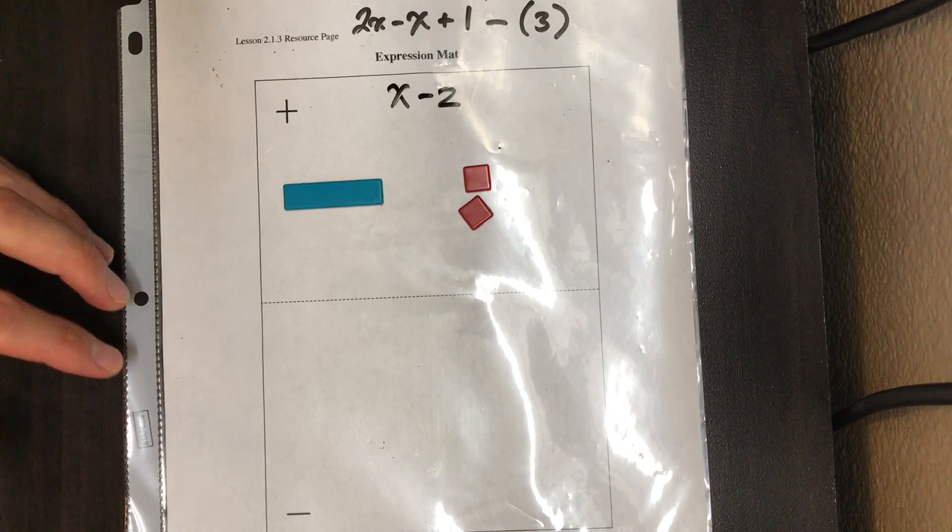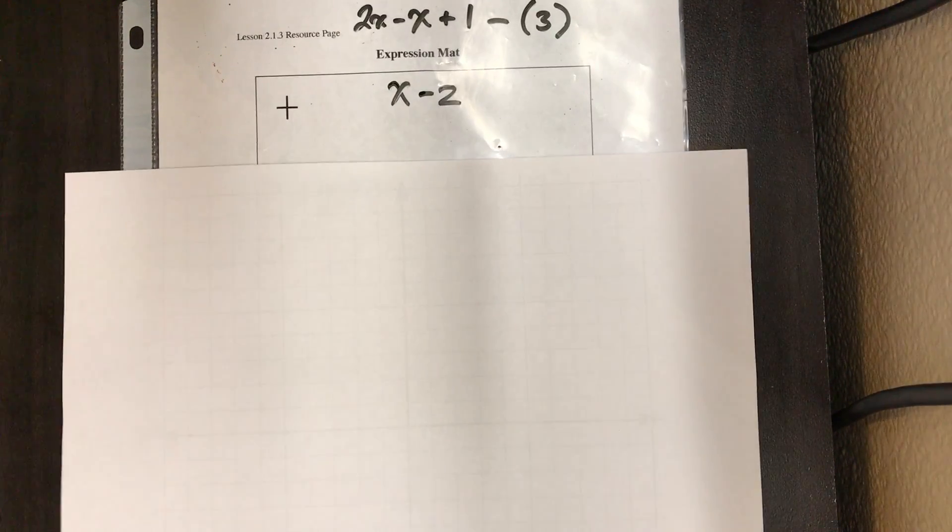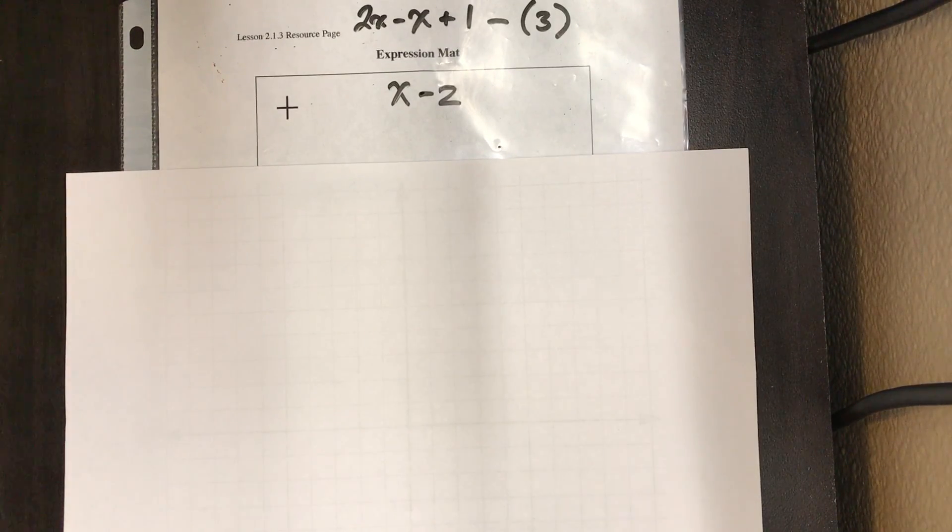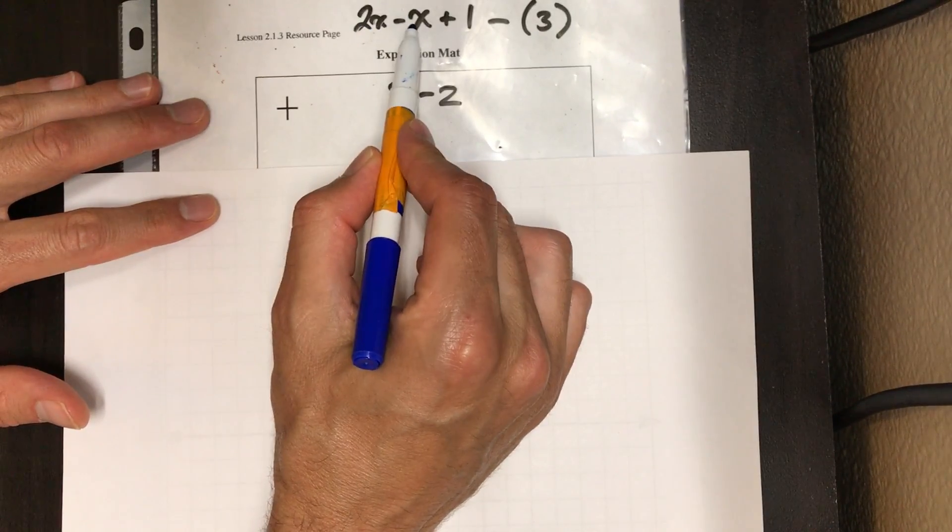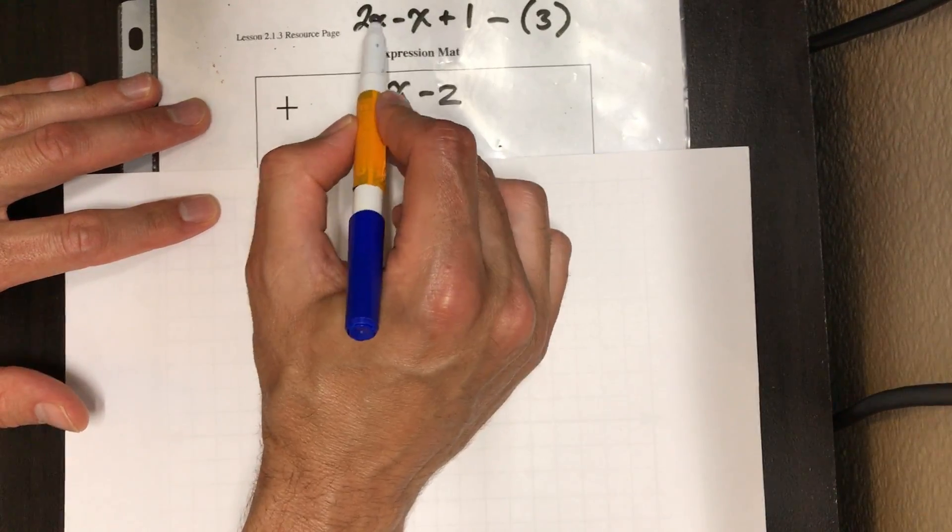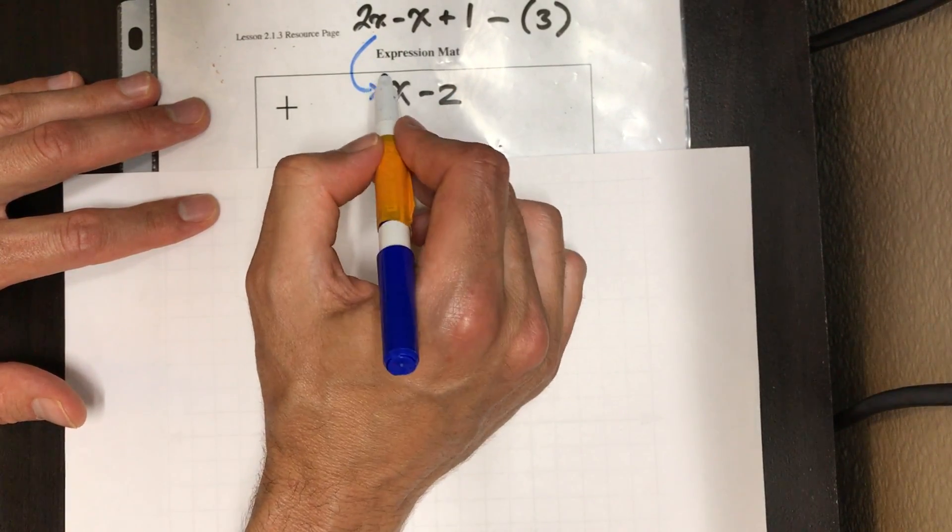Now you know me, I like to just say, what happened if our algebra tiles went away? How do we get this? So take the original and end up with x minus two. We've got two x's and we take one x away. So if we had two and we take one away, we're left with one.